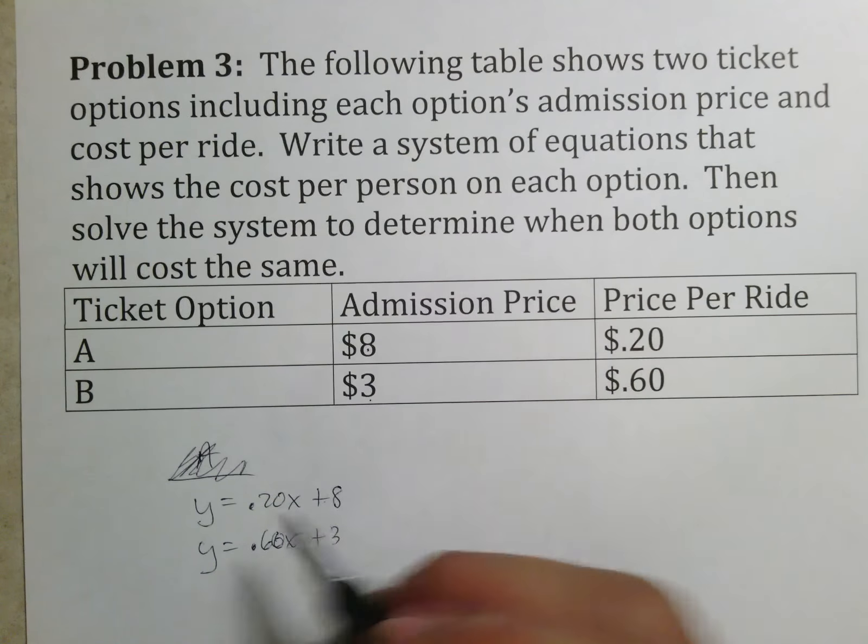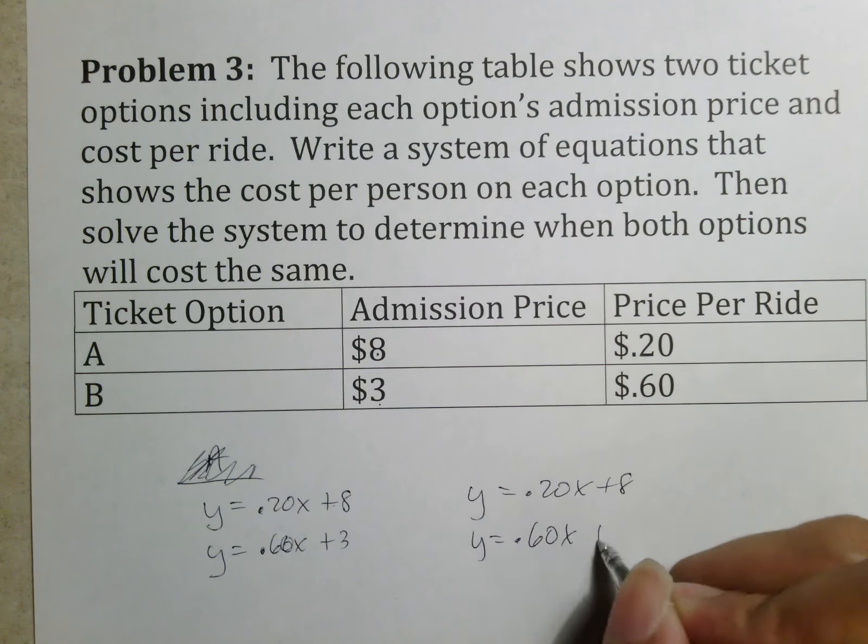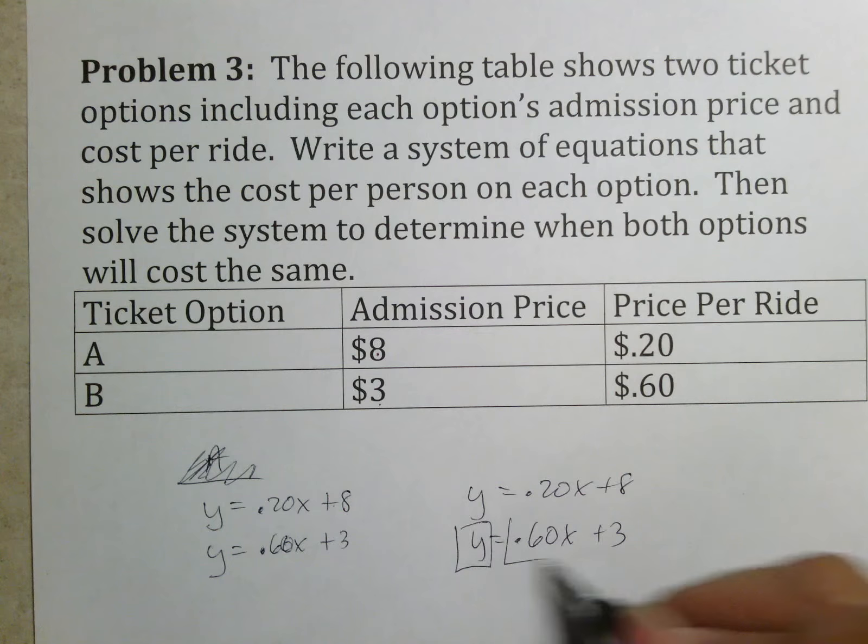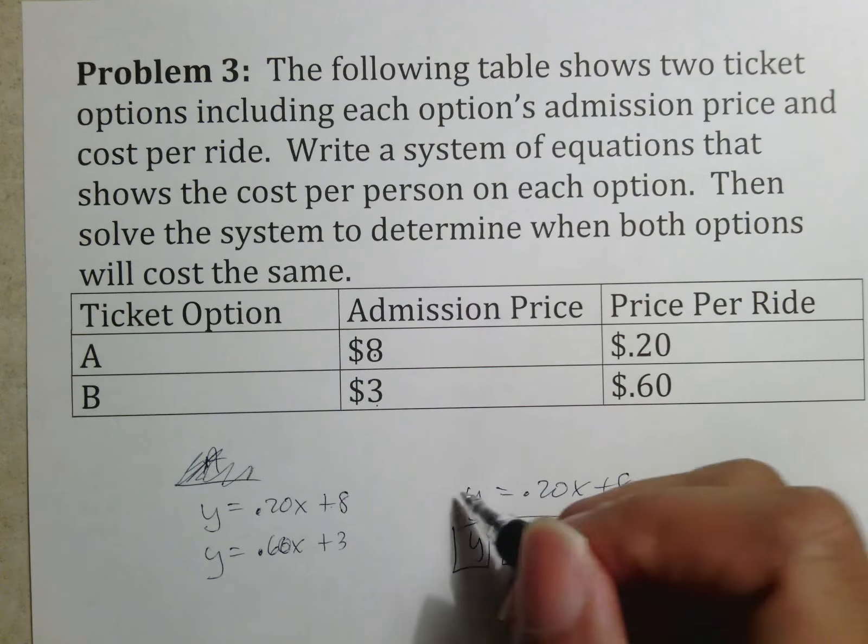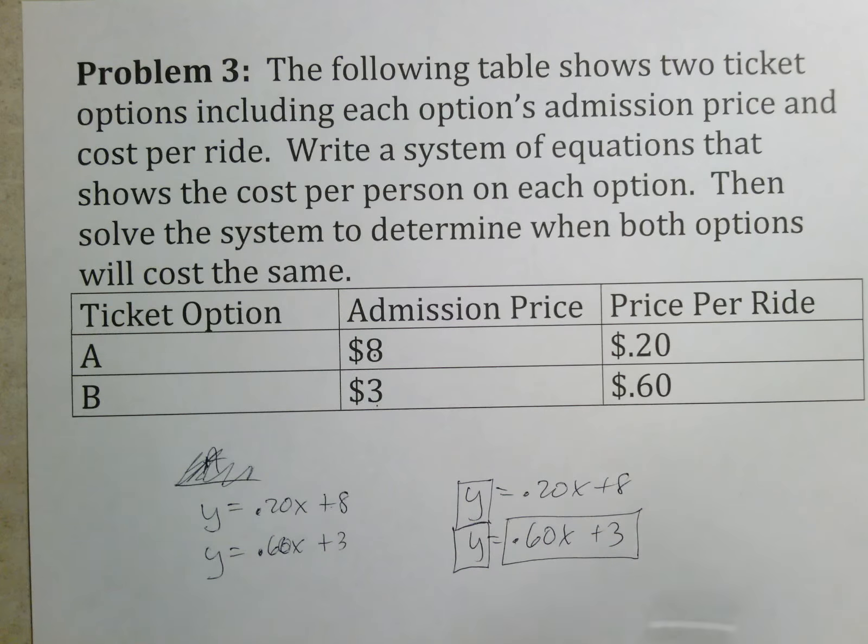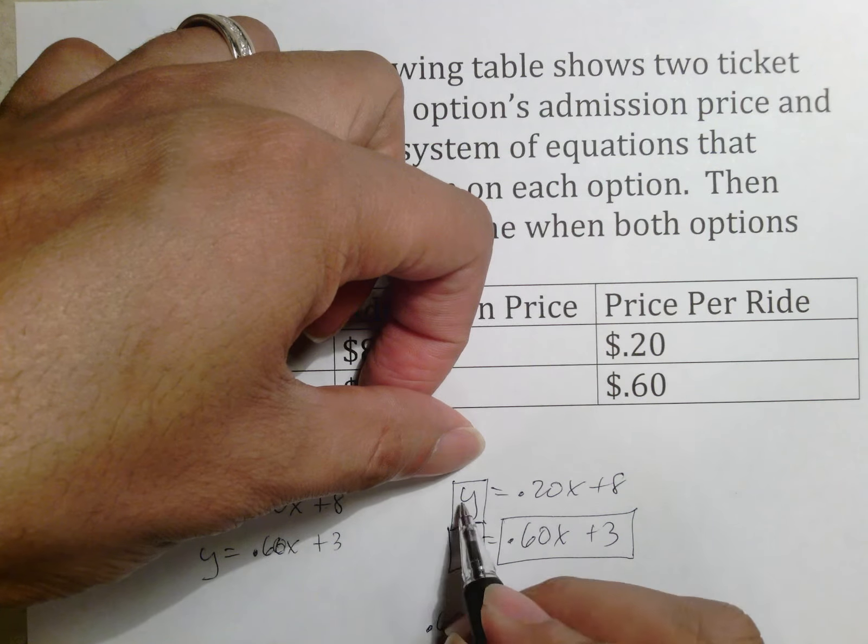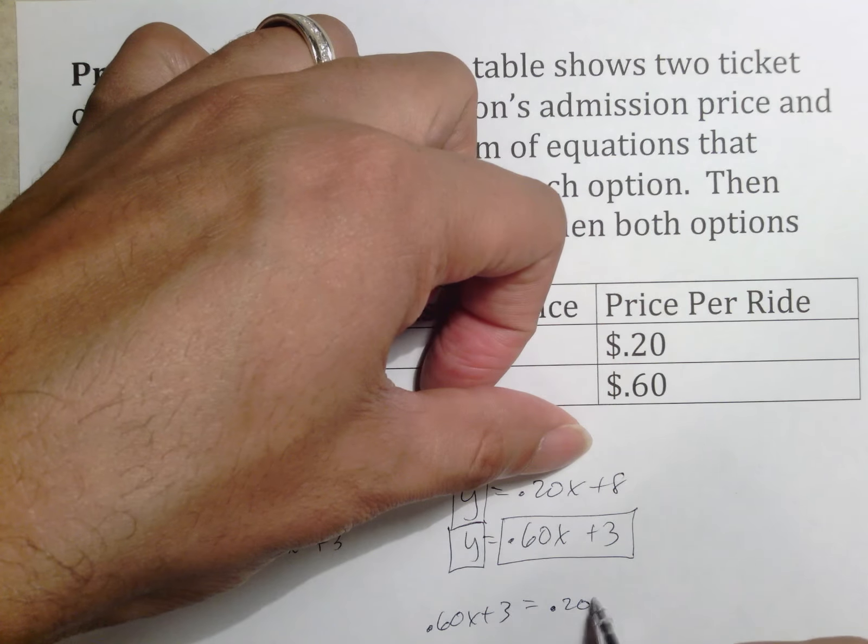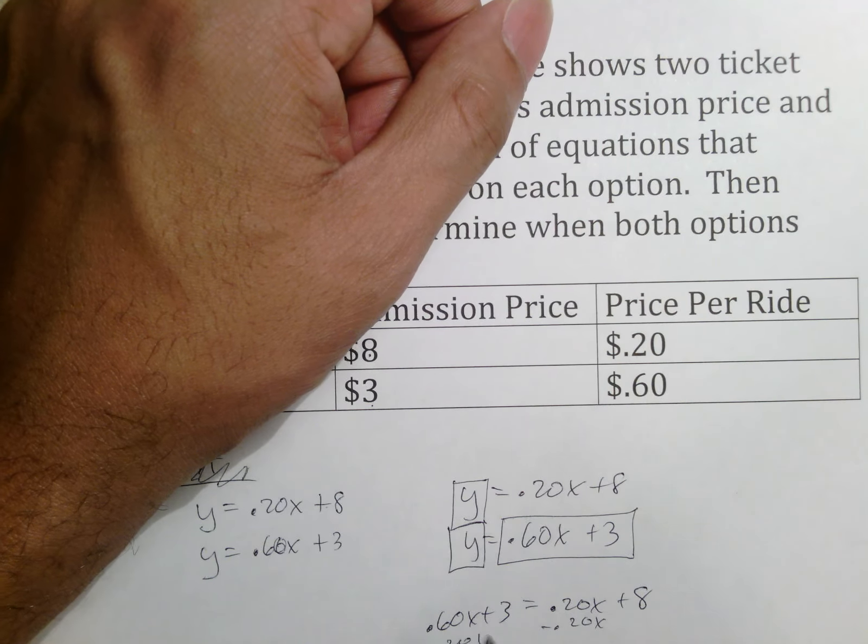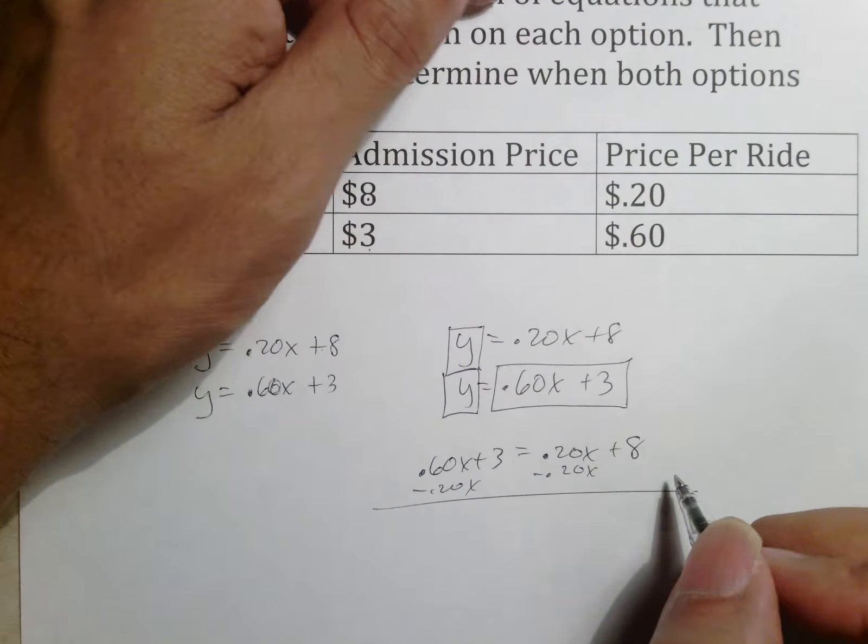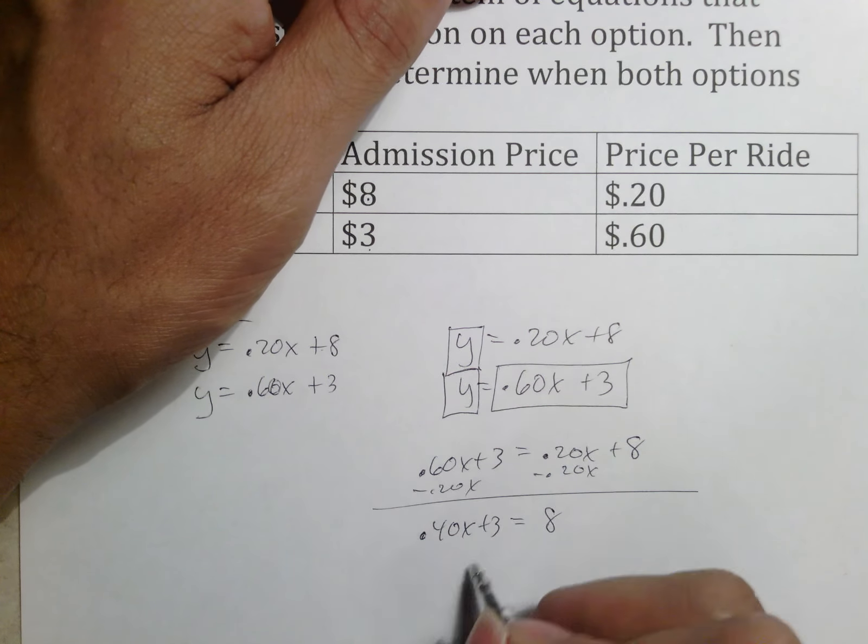Last thing I want to do is solve it. If I was going to solve this, I believe substitution is the best choice. Doesn't matter which one you substitute for because both of these y's are alone. Simply take that number and put it in over here. It would turn into 0.60x plus 3 equals 0.20x plus 8. Subtract the smaller x, which is the 0.20, which gives me 0.40x plus 3 equals 8.